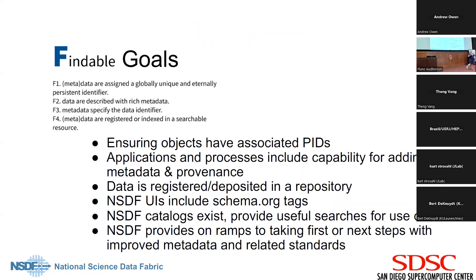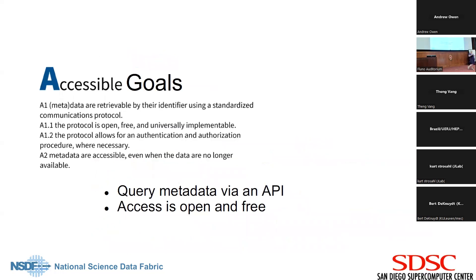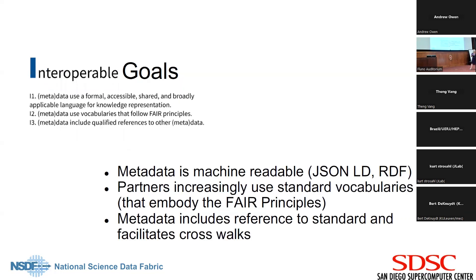What are some of the findable goals? To have persistent IDs for each data object, and schema.org tags for each metadata object. What are the accessible goals? We might want to query metadata via APIs, and make that access open and free across OSG or any distributed computing environment. We need to think about how people are going to find one another's resources in that distributed environment, and how they'll know in a machine-actionable way if other software can interact with them and how. This is the bedrock for making this kind of compute interoperable.